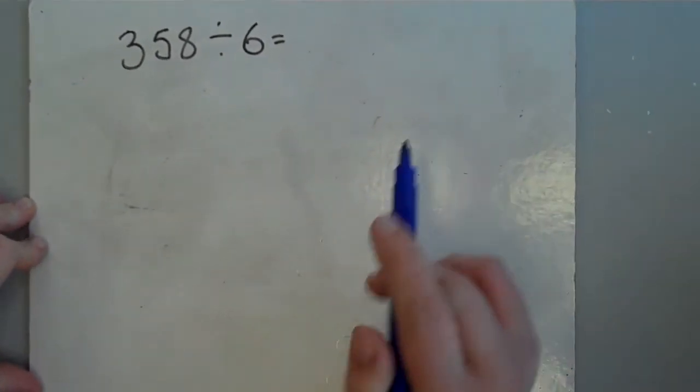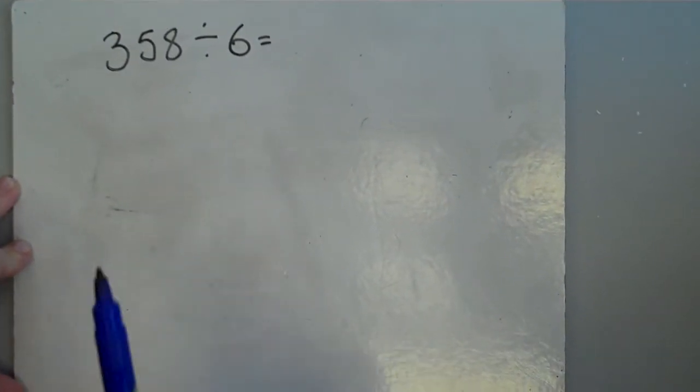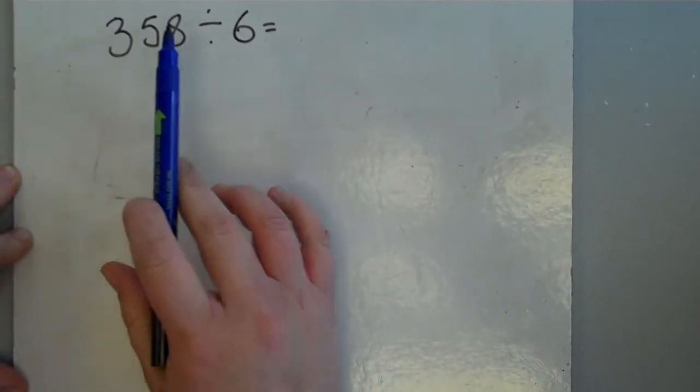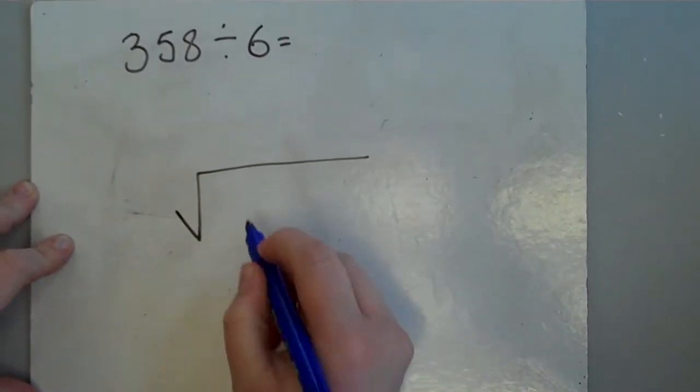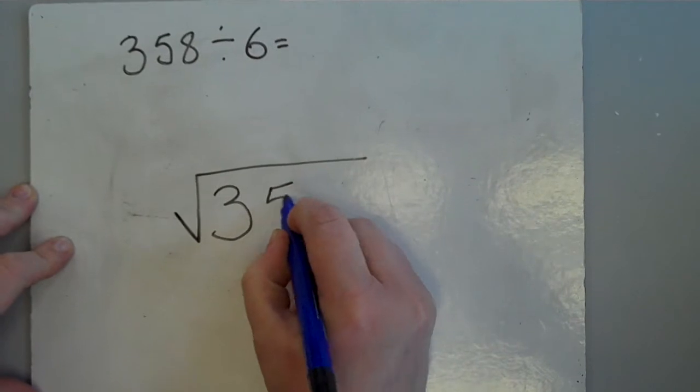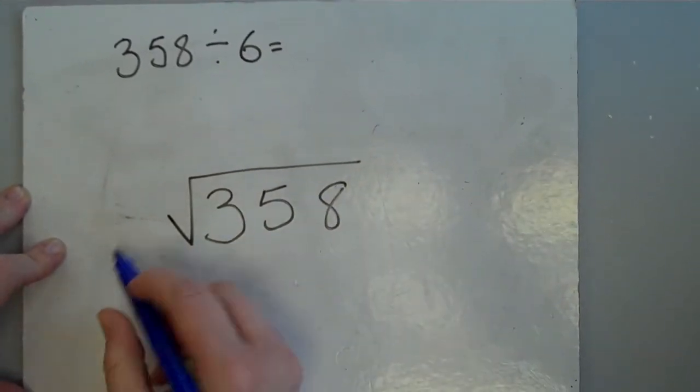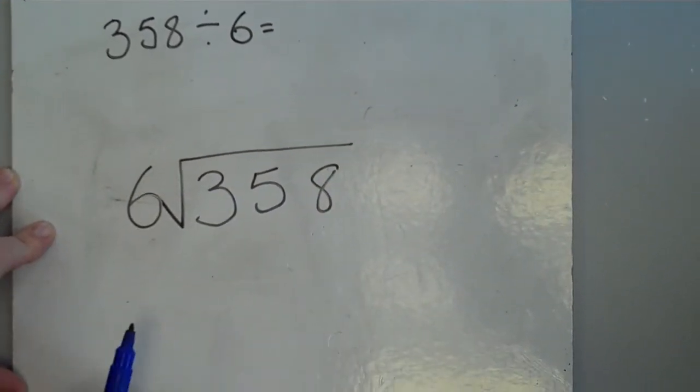Now, the first thing we're going to do, we're going to think about this calculation as 358 people waiting to get onto bus number 6. So then bus number 6 arrives, finally.